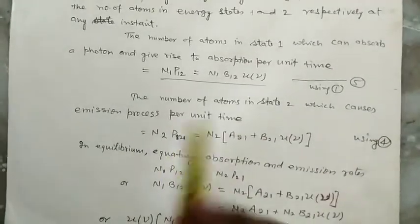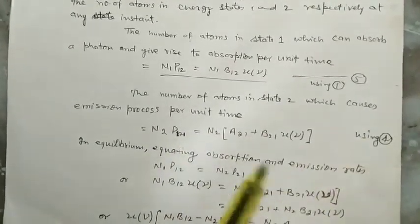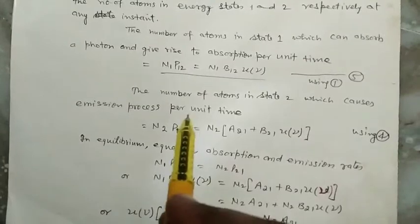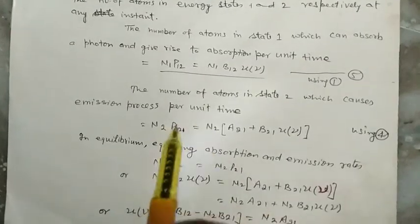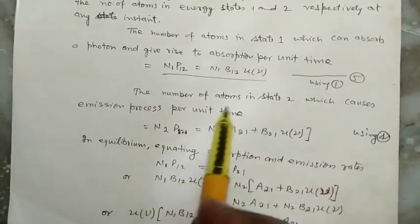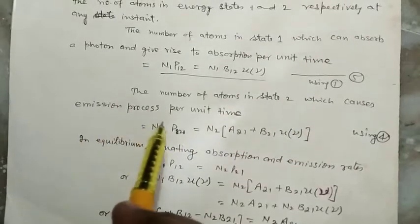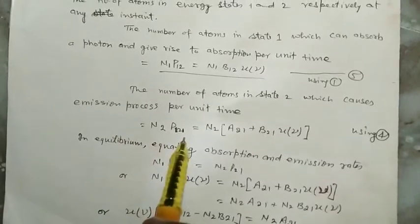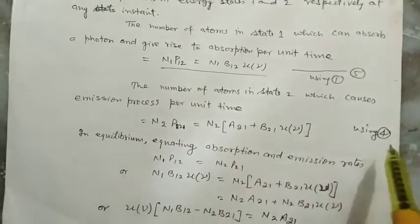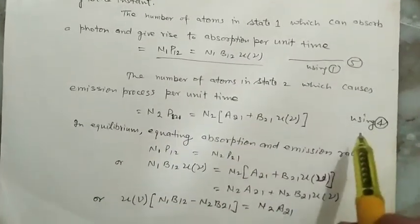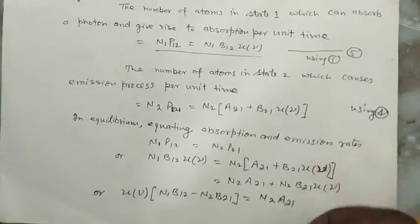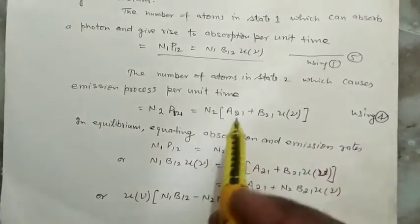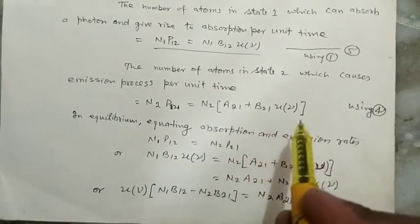Similarly, the number of atoms in state 2 which causes emission process per unit time is equal to N2·P21. The value of P21 from equation number 4 from the previous video lecture is equal to N2[A21 + B21·U(ν)].